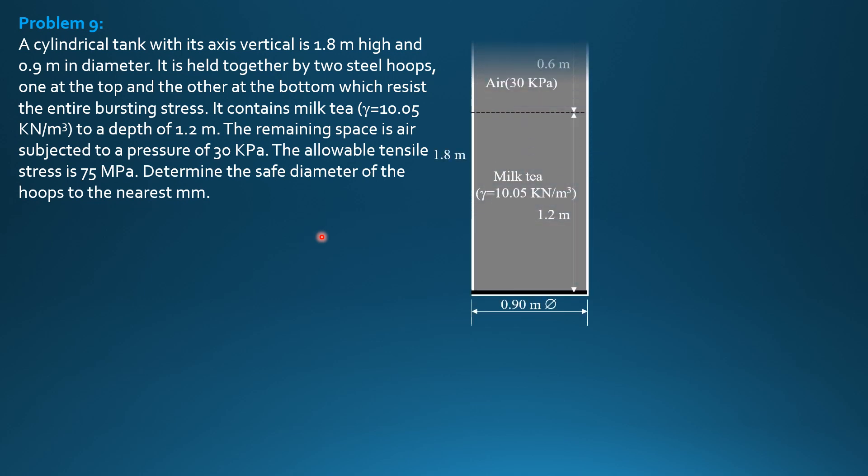So this is the situation. We have a tank 0.9 meter in diameter, 1.8 meters high. The lower 1.2 meter depth is filled with milk tea, specific weight 10.05 kilonewtons per cubic meter. And the upper 0.6 meter layer is air subjected to 30 kilopascals gauge pressure. So we draw the free body diagram, including the pressure diagram.